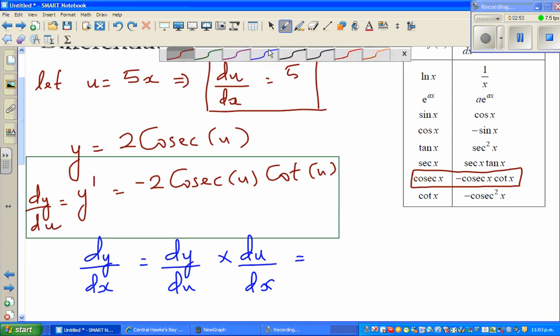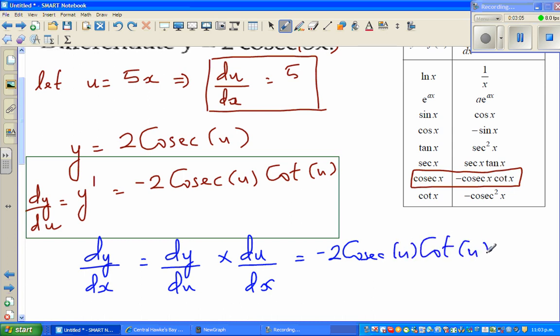So dy/du is minus 2 cosec u times cot u, times du/dx which is 5.